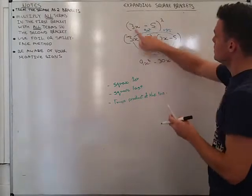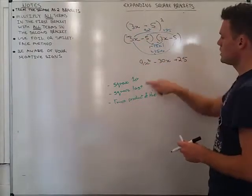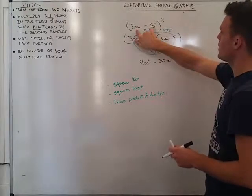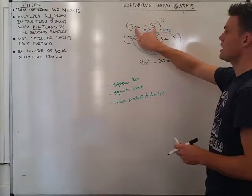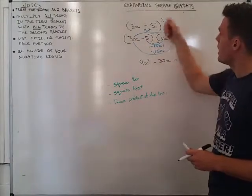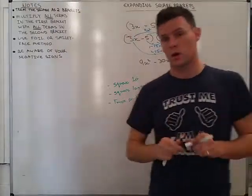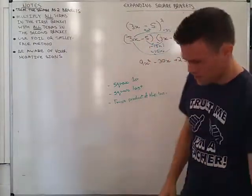And let's check, square the first, 9x squared, square the last, positive 25, twice the product of the two, 3x times negative 5 gives me negative 15x, double that, negative 30x. So the shortcut does work there. Please make sure that you know that shortcut will only work when you're squaring a bracket. It won't work when you're expanding normal brackets.